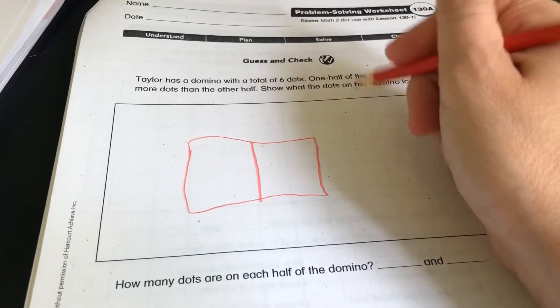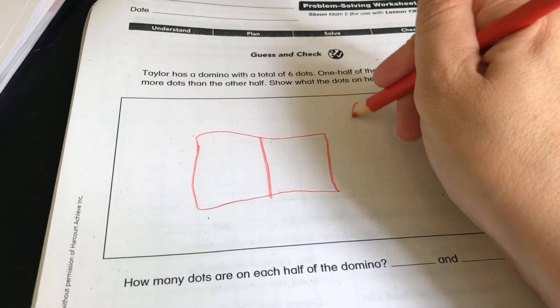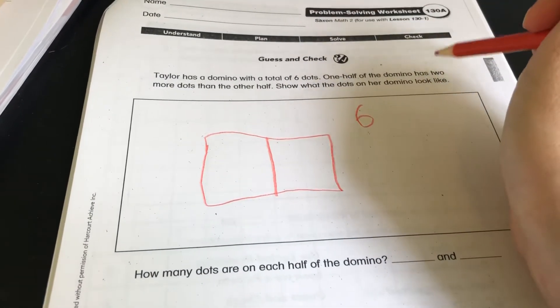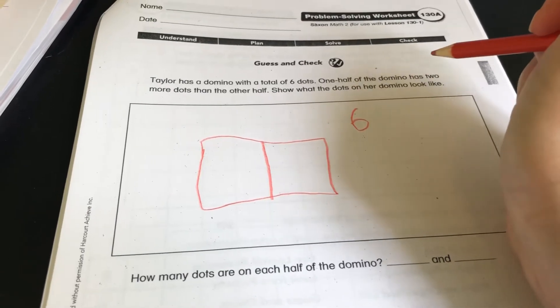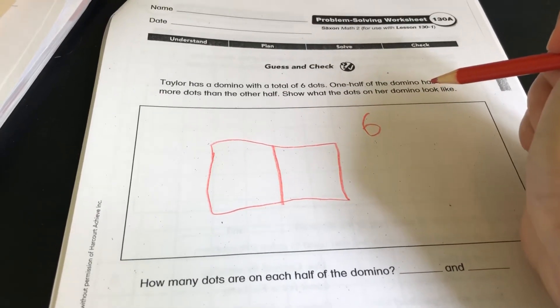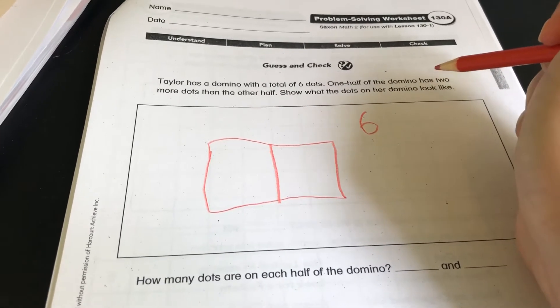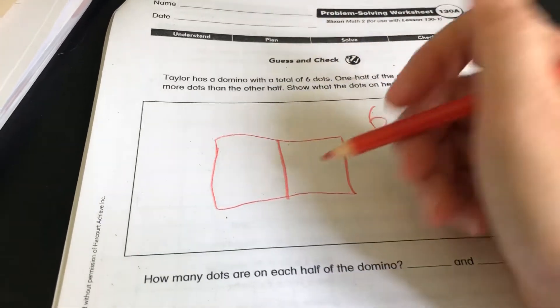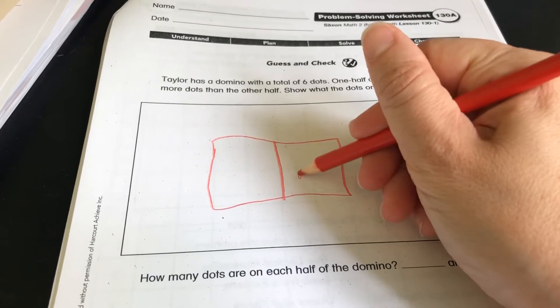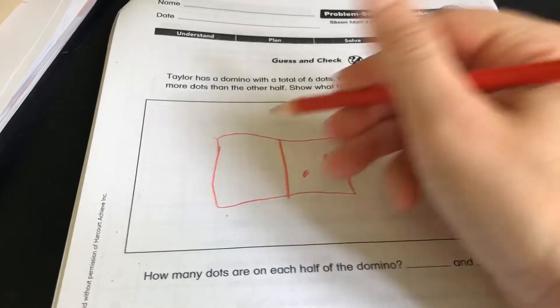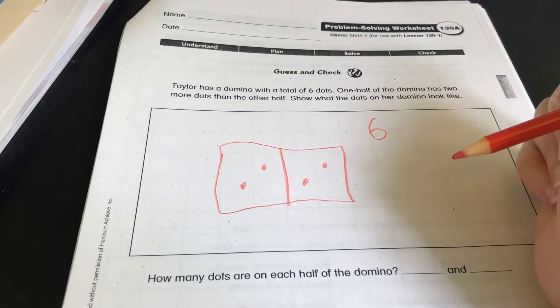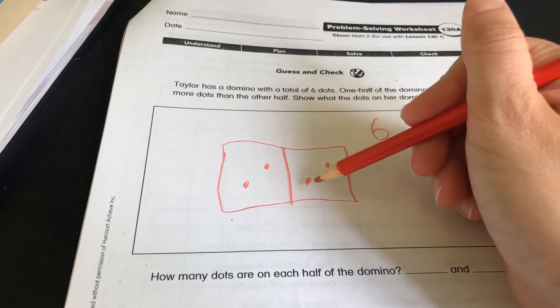And we know that dominoes are divided in half. There are six dots total. So, one side has two more dots than the other side. So what that means is that both sides have at least two dots.